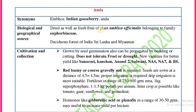The next important drug is Amla. The synonyms are Indian gooseberry, Amalika, and Amla. It is called Indian gooseberry because it is found in India and the fruit resembles a berry. The biological source is the fresh fruit of Phyllanthus emblica (Emblica officinalis), family Euphorbiaceae. It is found in deciduous forests of India, Sri Lanka, and Myanmar.